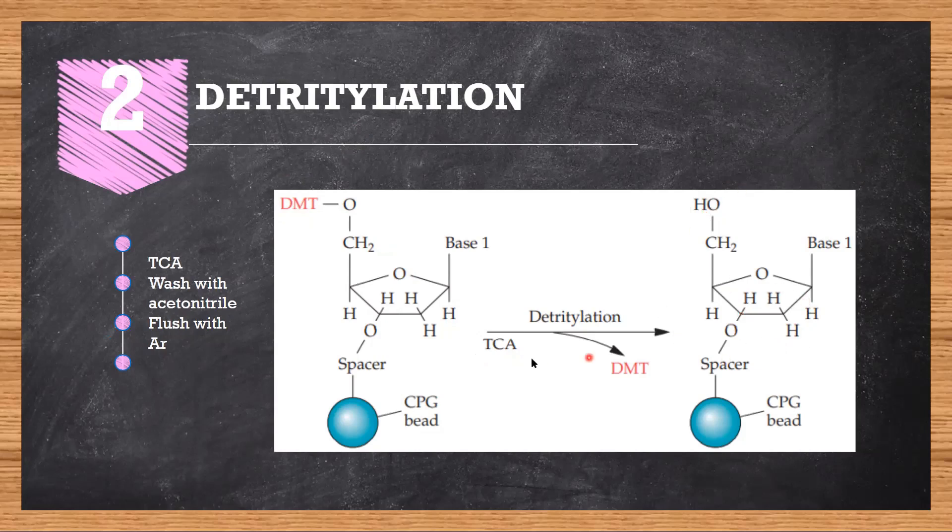After this process, we need to remove any excess TCA, so we use the reagent acetonitrile. After a wash of acetonitrile, we flush the column with argon gas. This is in order to remove any residual acetonitrile.